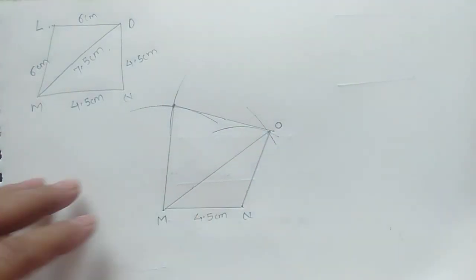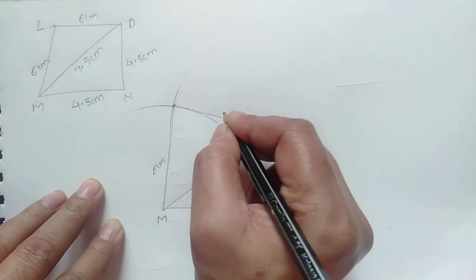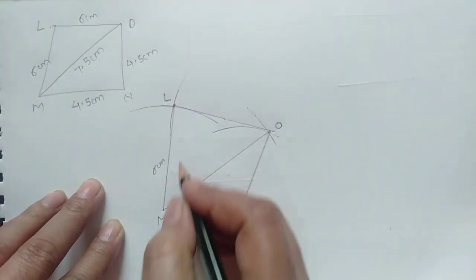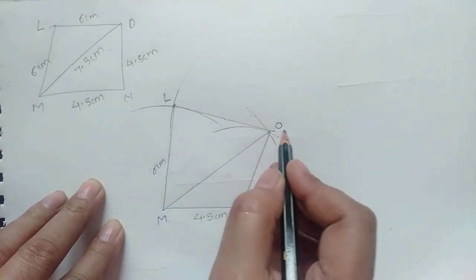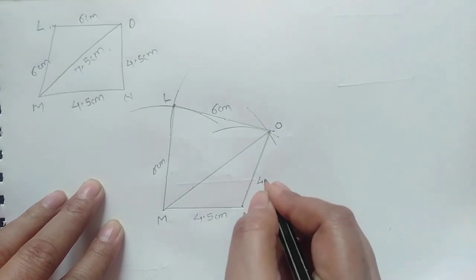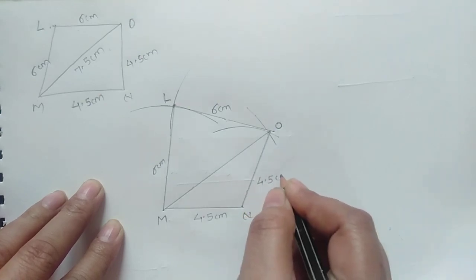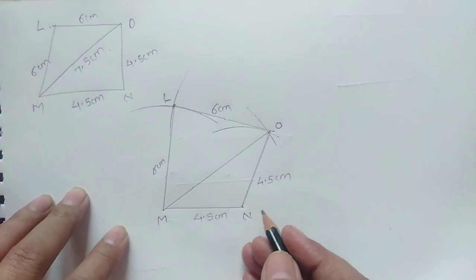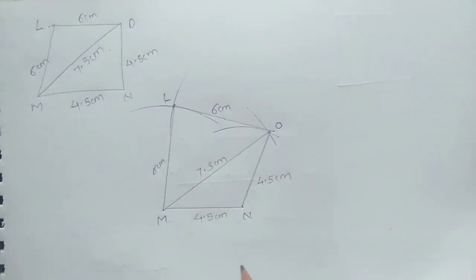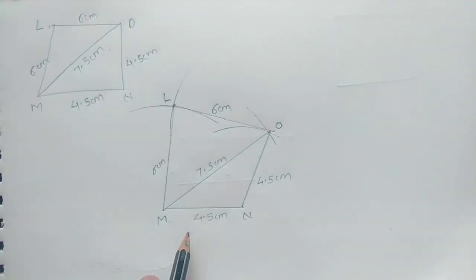Give the labels and measurements: LM is 6 cm, LO is 6 cm, ON is 4.5 cm, and OM is 7.5 cm. This is the required actual figure. Practice set 8.1 is now complete. Thank you.